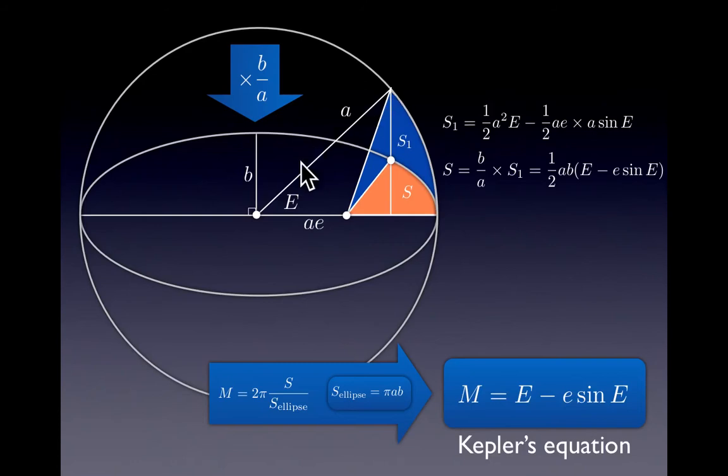This simpler area we can now express as the difference between the part of the circle, which has an area of radius squared times the angle divided by 2, and we need to subtract from this area this triangle.